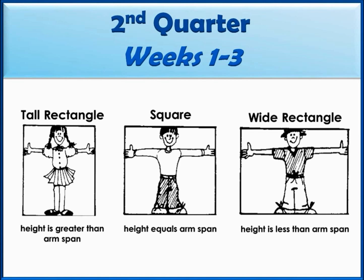This first activity is called 'Are You a Square?' It asks students to measure their height and compare it to their arm span or wingspan. This activity could easily incorporate several of the standards from weeks one through three by having students first select the measurement tool and estimate their measures. For those students who are a tall or wide rectangle, they could then find the difference between the lengths of their height versus wingspan.